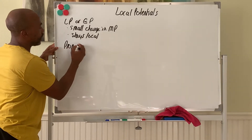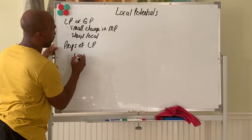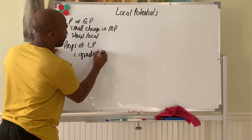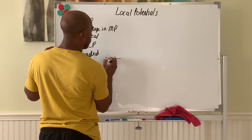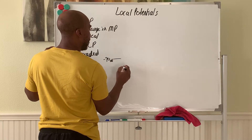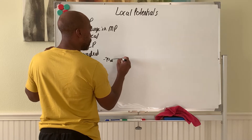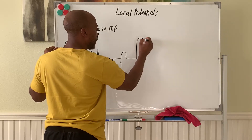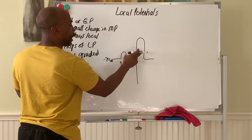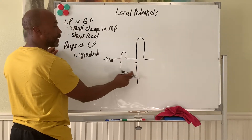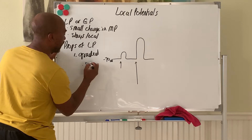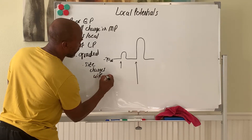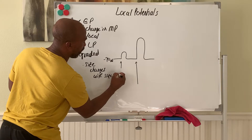Some properties of local potentials: first, local potentials are graded. This means that if you're at negative 70 millivolts and a stimulus comes in, the change may be small. But if you get a bigger stimulus, the change can be larger. So the size of the change is based on how big the stimulus is — it's graded, meaning size changes with size of stimulus.